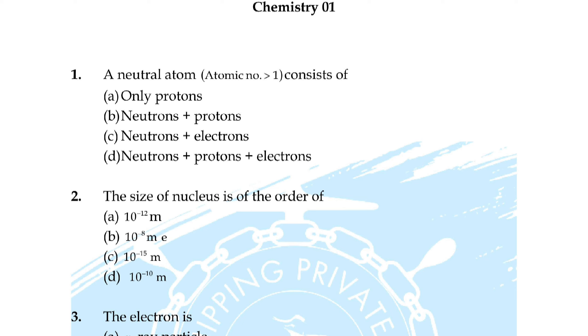Question number 24: colligative properties of a solution are those whose value depends on — option A: number of molecules present in it, B: number of ions present in it, C: number of particles present in it, or D: none of these. Correct answer is option C: number of particles present in it.